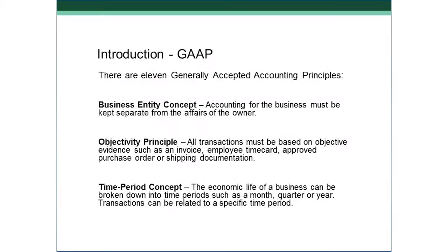There are 11 generally accepted accounting principles. These three we've already learned about, but let's do a quick review. The business entity principle says that an owner and a business must be kept separate. The bank account of the owner cannot be commingled with the business account. When the owner contributes cash or other assets to the business, it's actually a transaction from the owner into the business, and vice versa.